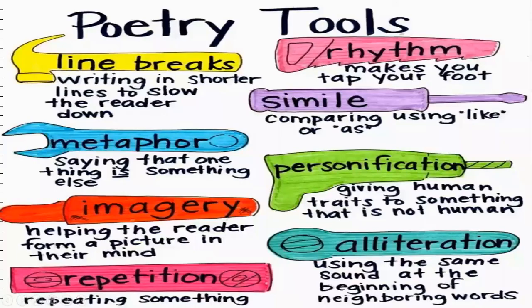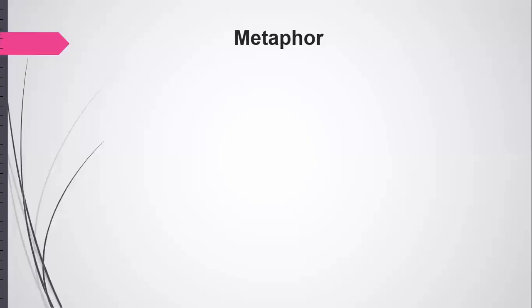As you all know, there are different types of poetic devices: line breaks, simile, personification, alliteration, imagery, repetition, and metaphor. So we are going to find out what are the different poetic tools or devices those have been used in the poem 'The Toys.'